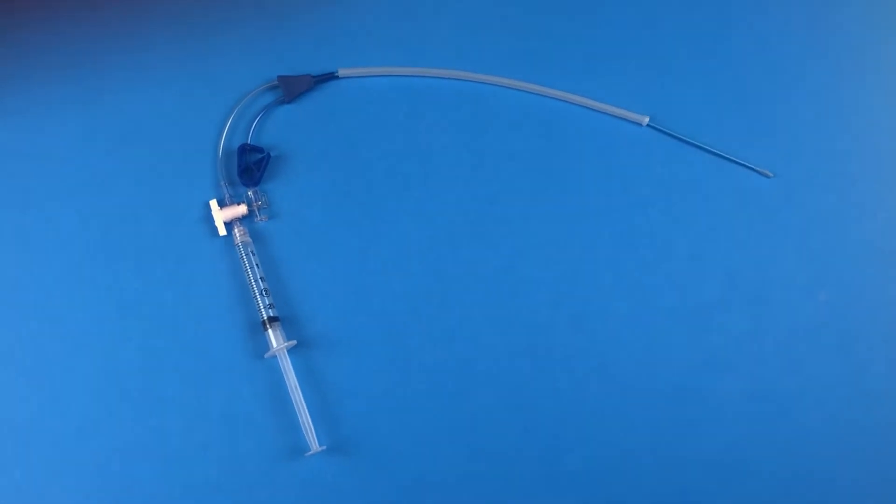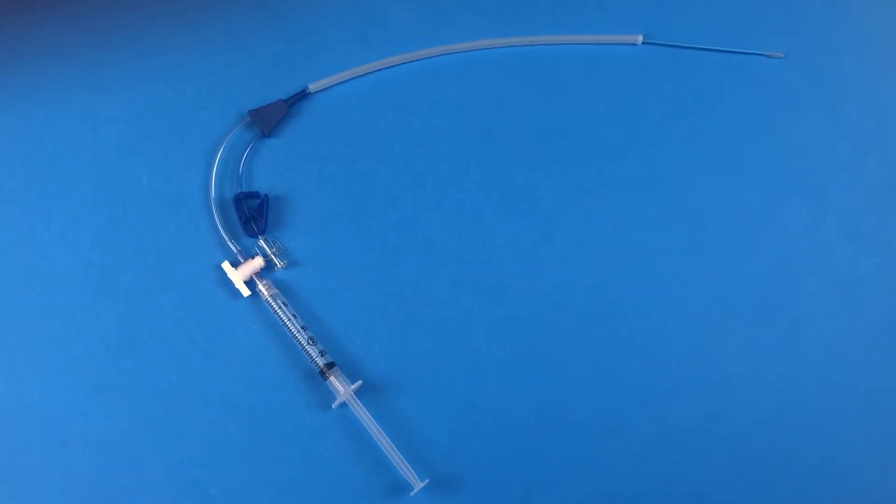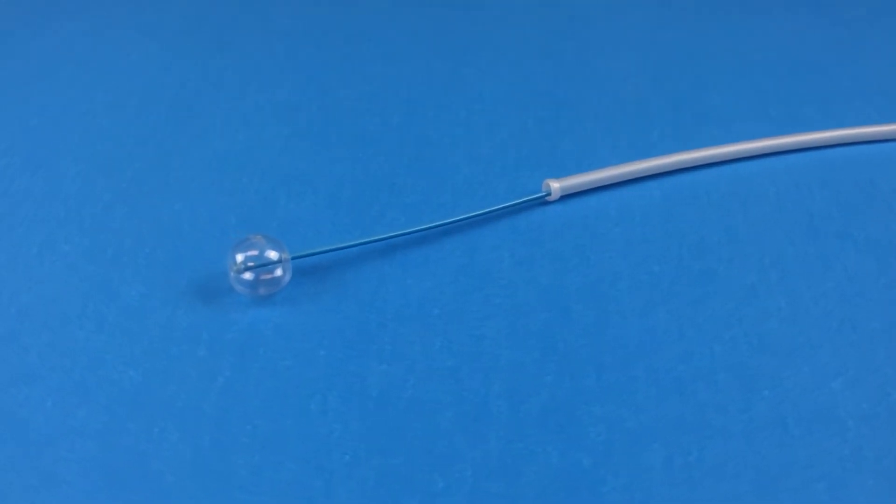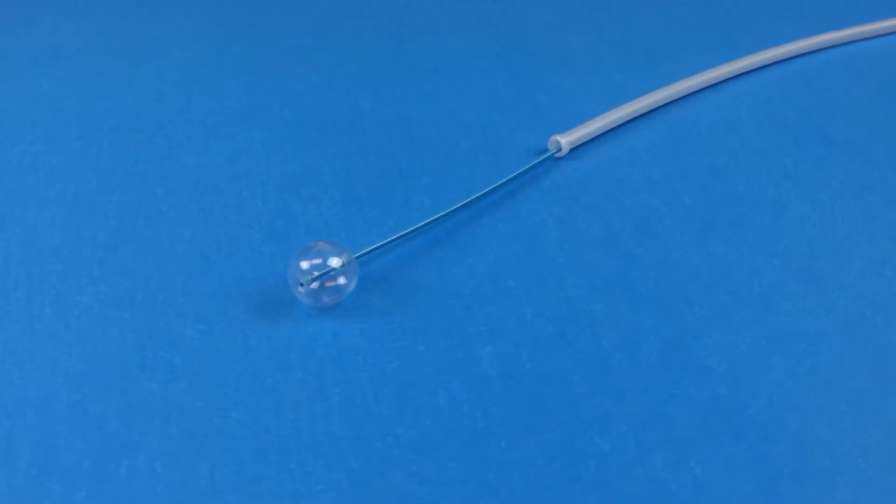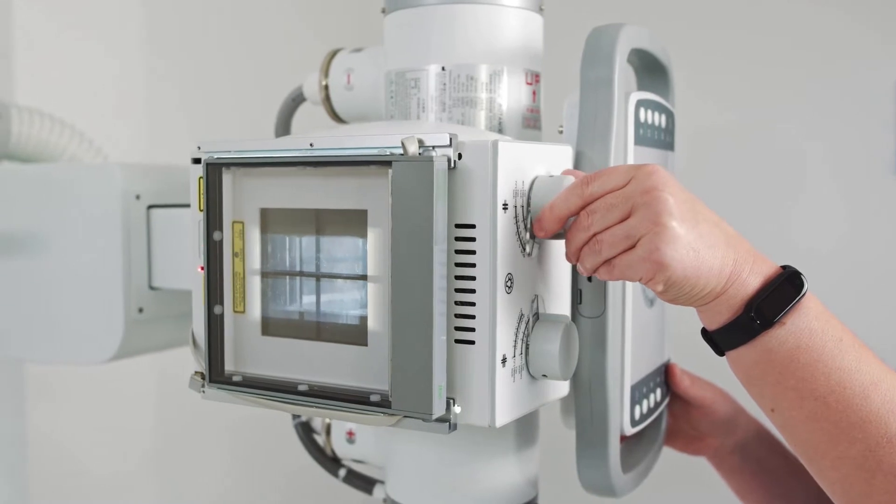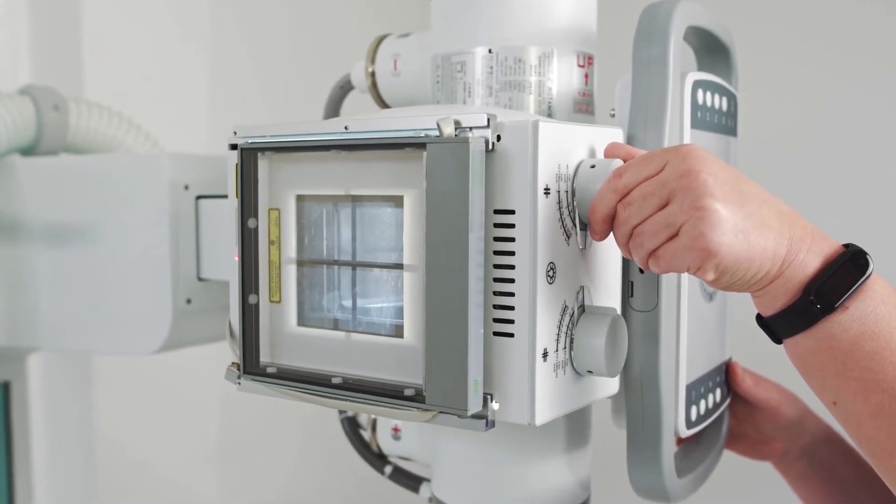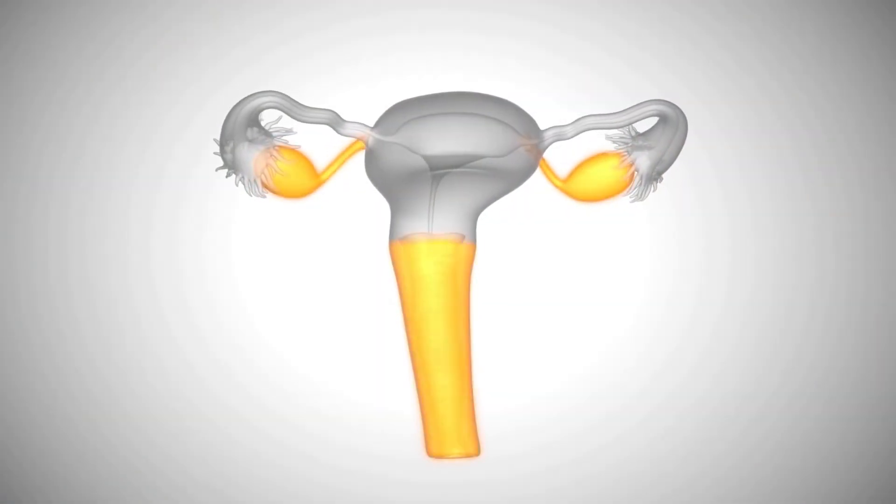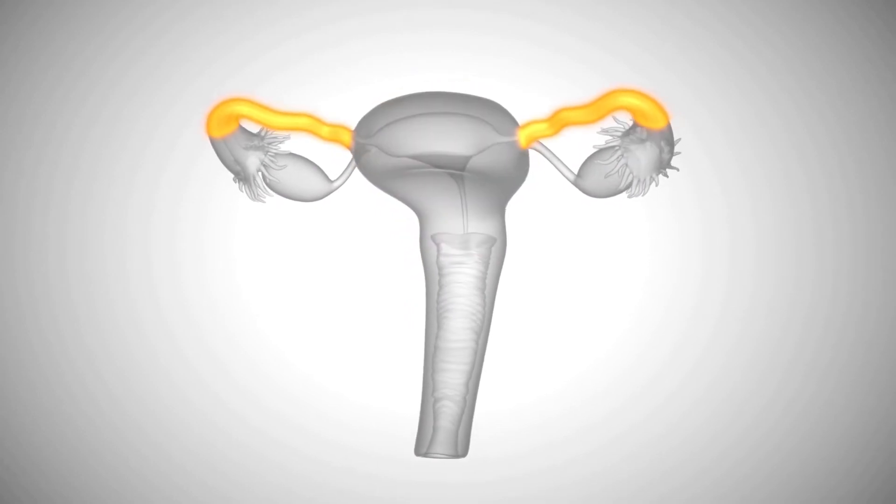This is the Thomas Medical flexible HSG catheter. The catheter is used in hysterosalpingography or sonohistography procedures, HSG or SHG for short, which visualize the uterine cavity and fallopian tubes.